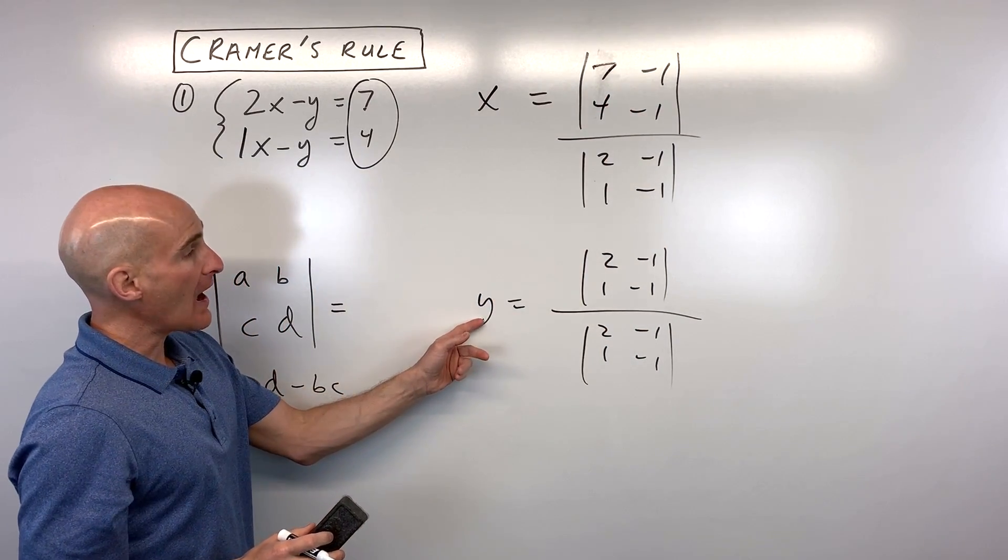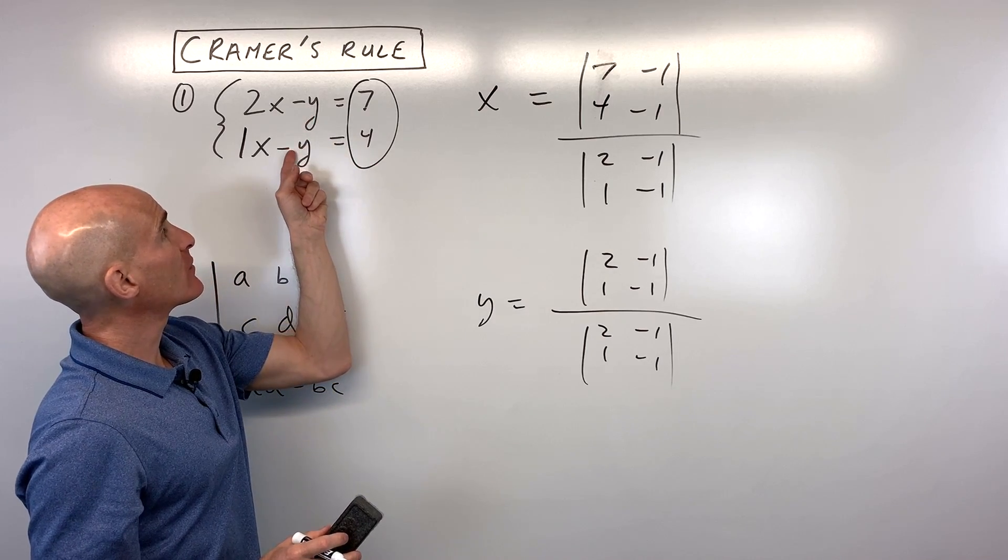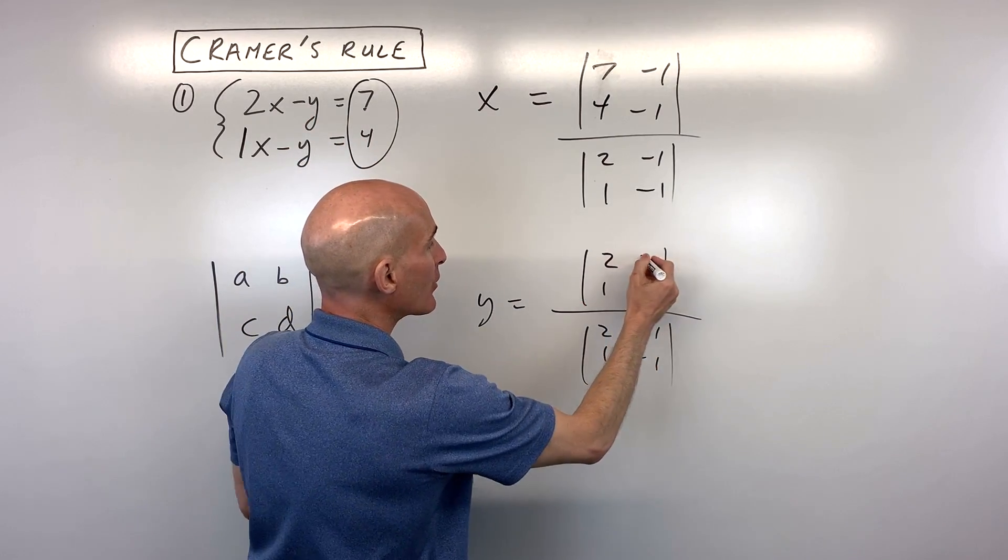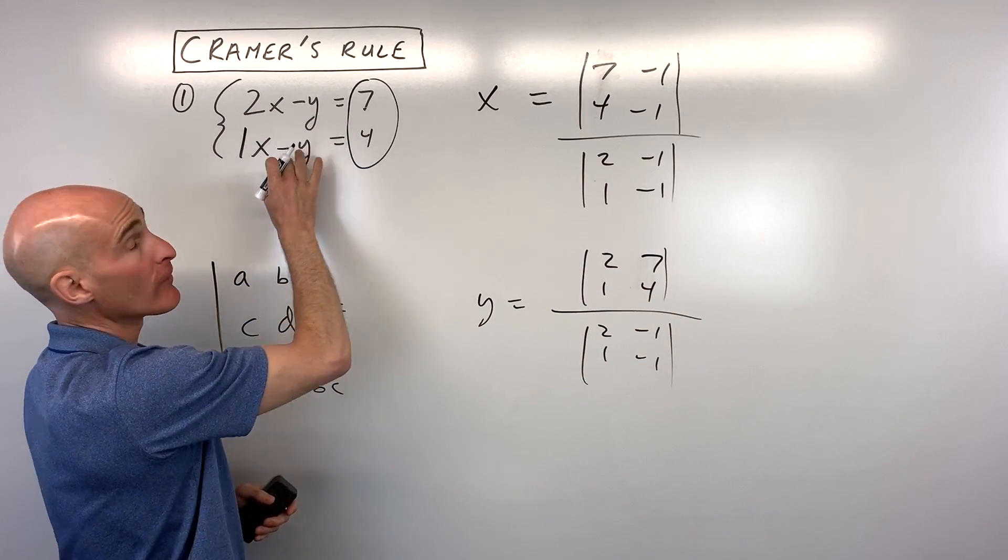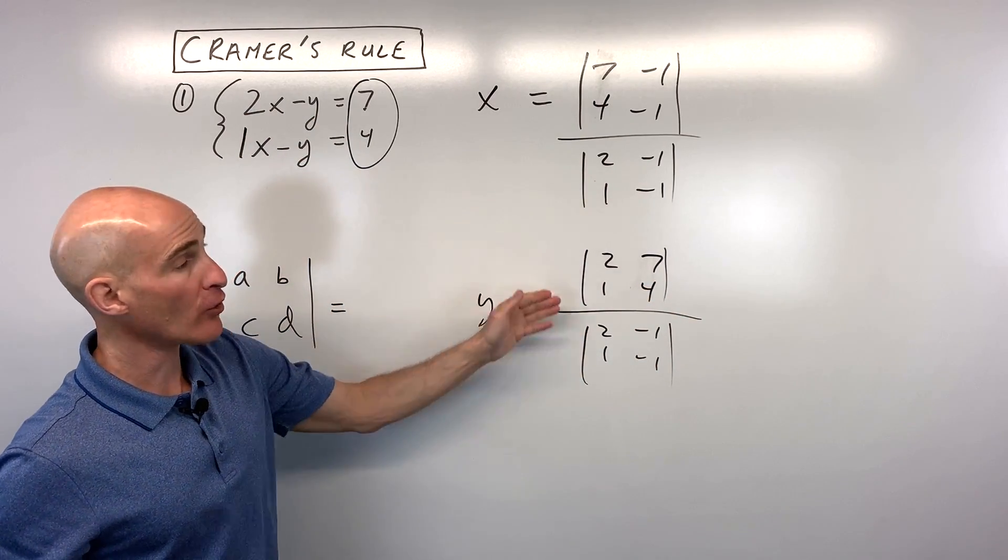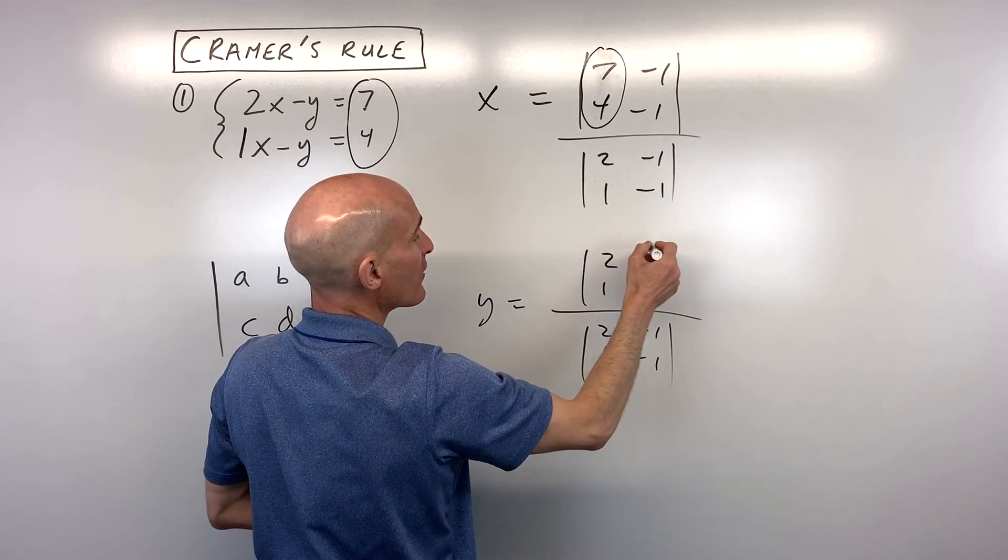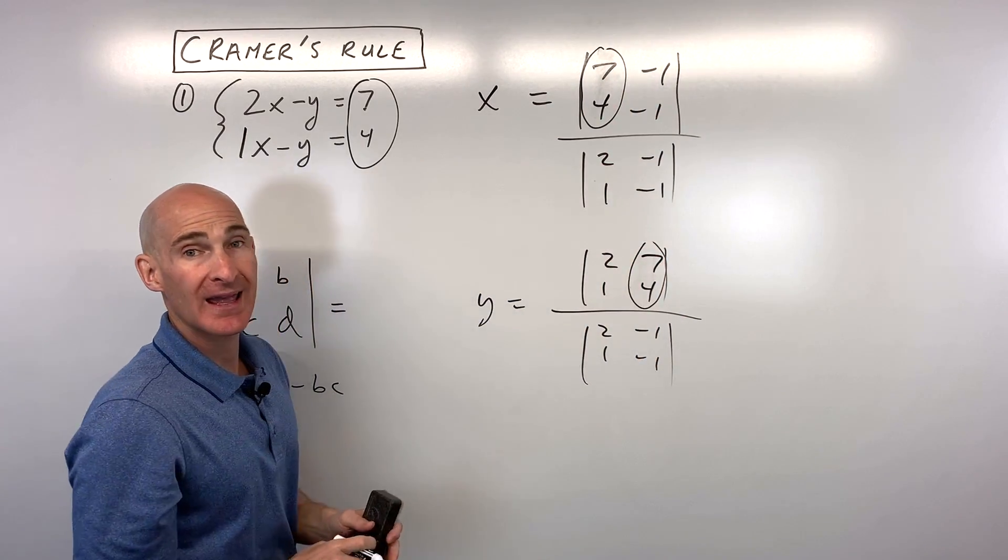When I'm solving for y, I want to replace the coefficients in front of the y with the solutions 7 and 4. The denominator I did not change. I just left those as the coefficients in front of the variables for both x and y. So that's all we did: we changed the coefficients for x and the coefficients for y in the numerator.